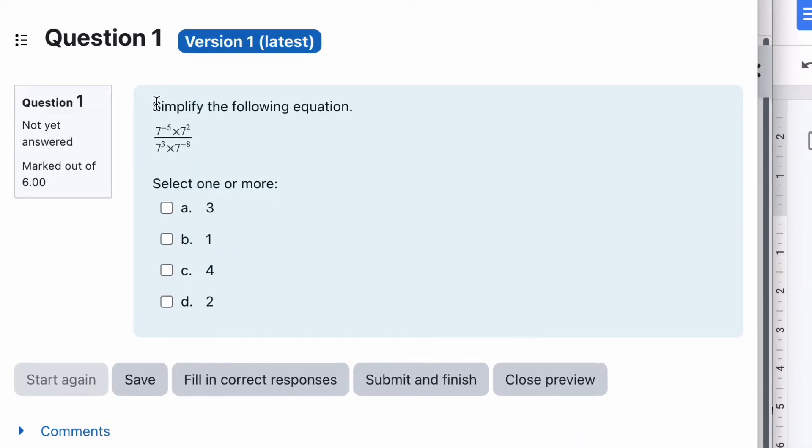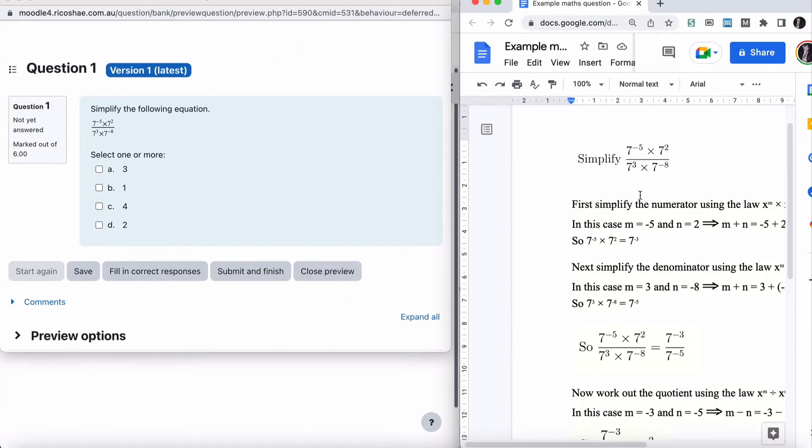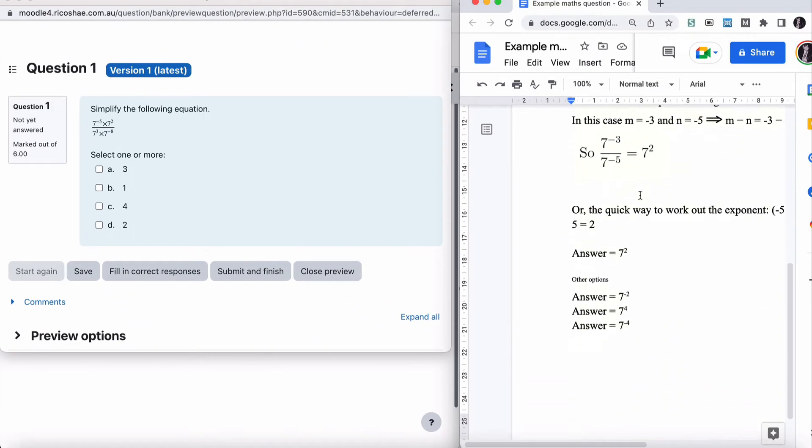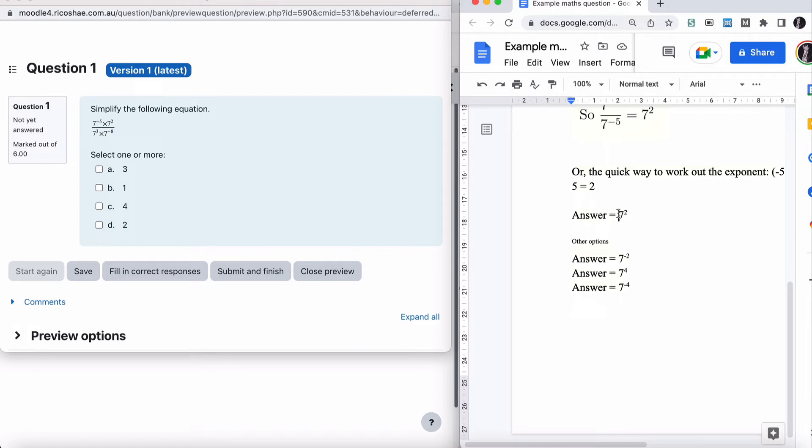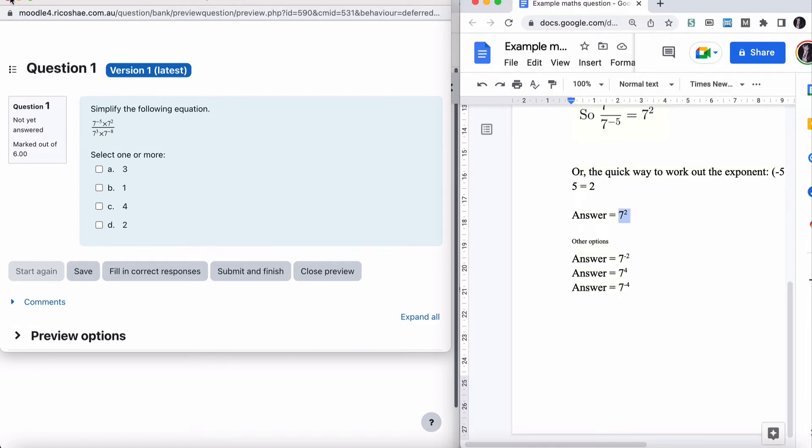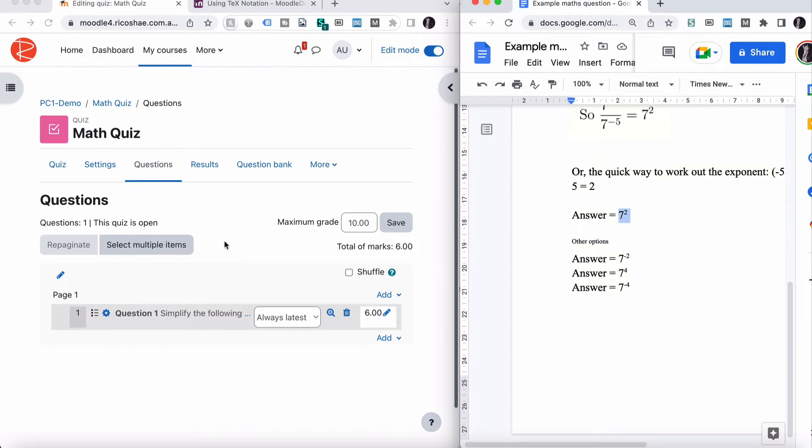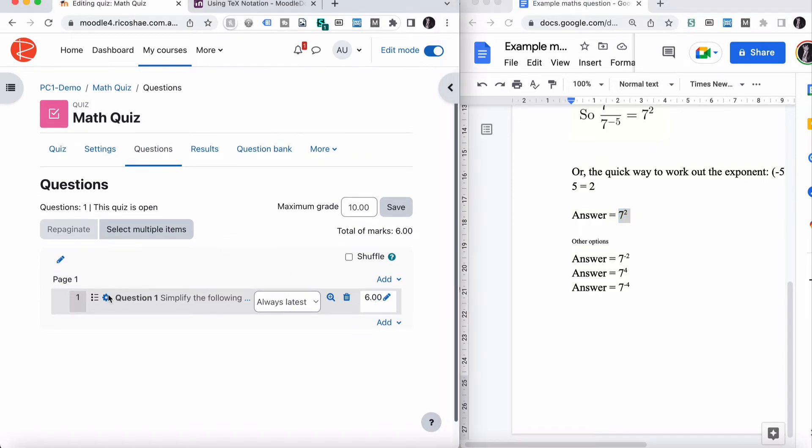And if we preview our quiz now. You can see that our quiz is simplify the following equation. 7 minus 5 times 7 squared. So that looks like the correct one we've got over here. Now we've got to put in our possible answers and our correct answer. So our correct answer is 7 squared. Here's the correct answer to this one. So we're just going to go back in again. This time. We'll go and edit our question.